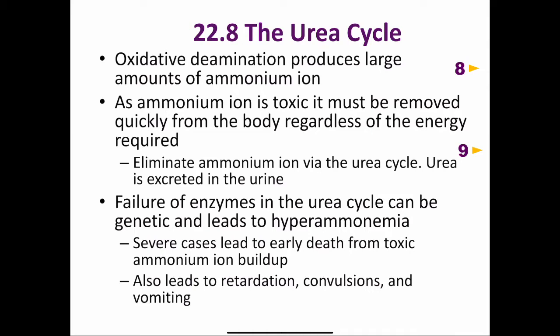There are genetically transmitted diseases that result from a deficiency of one of the enzymes in the urea cycle. The importance of the urea cycle is apparent when we consider the terrible symptoms suffered by afflicted individuals. A deficiency of urea cycle enzymes causes an elevation of the concentration of ammonium, a condition known as hyperammonemia.